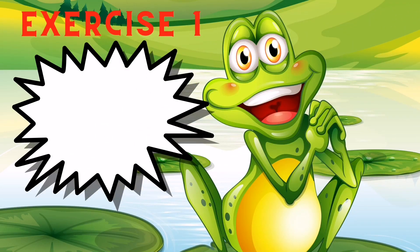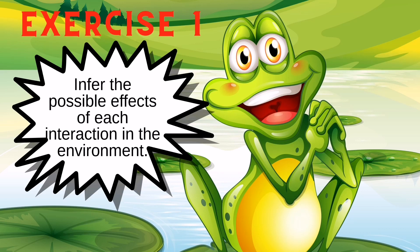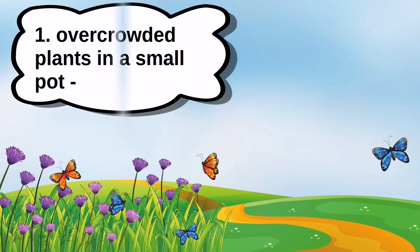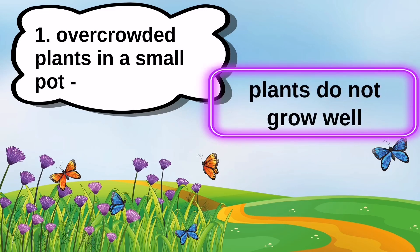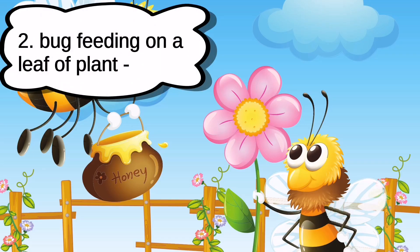Let's check what you have learned. Let's do exercise one: infer the possible effects of each interaction in the environment. First interaction — overcrowded plants in a small pot. What is the possible effect? Plants do not grow well. Second — a bug feeding on a leaf or plant. What is the possible effect? Plants will die.